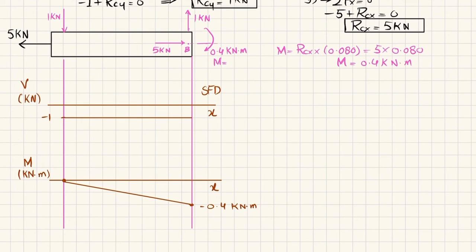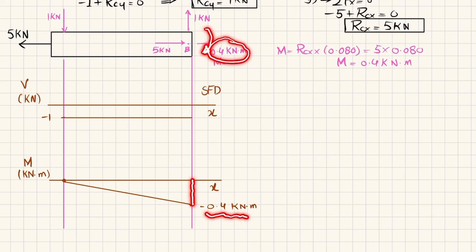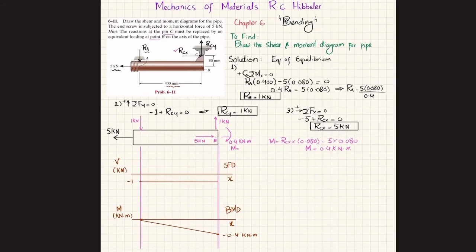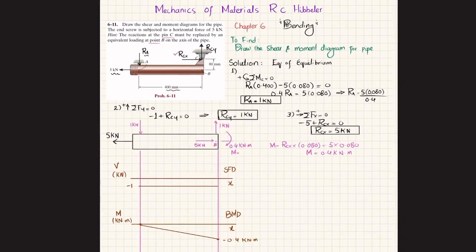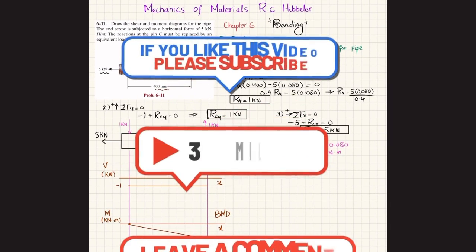At the end we have a clockwise moment of 0.4 kilonewton·meter, which is taken as upward in the bending moment diagram. So minus 0.4 plus 0.4 brings it back to zero. This completes the bending moment diagram. That was all about problem 6-11.